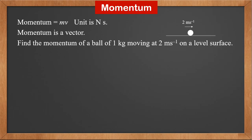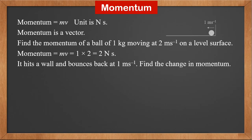Find the momentum of a ball of 1 kilogram moving at 2 meters per second on a level surface. Momentum is mv, which is 1 times 2, so it is 2 newton seconds. The ball then hits a wall and bounces back at 1 meter per second.